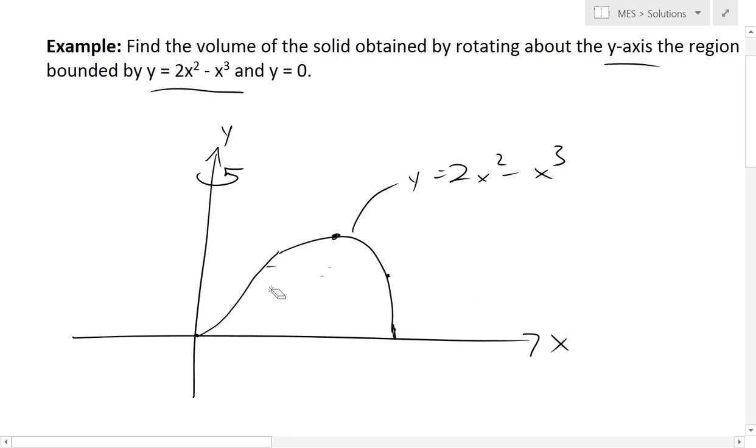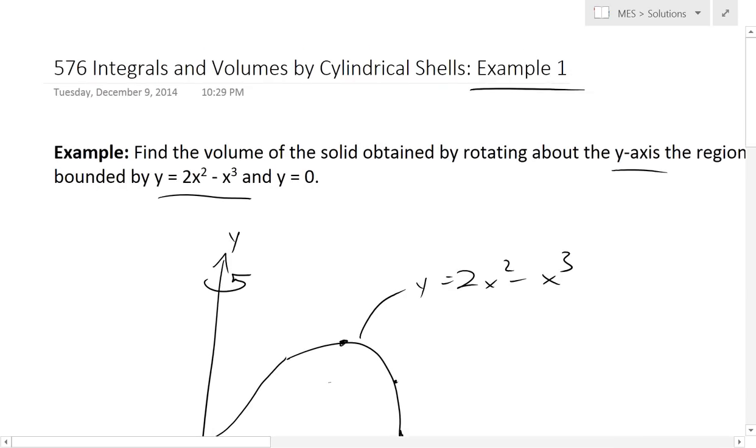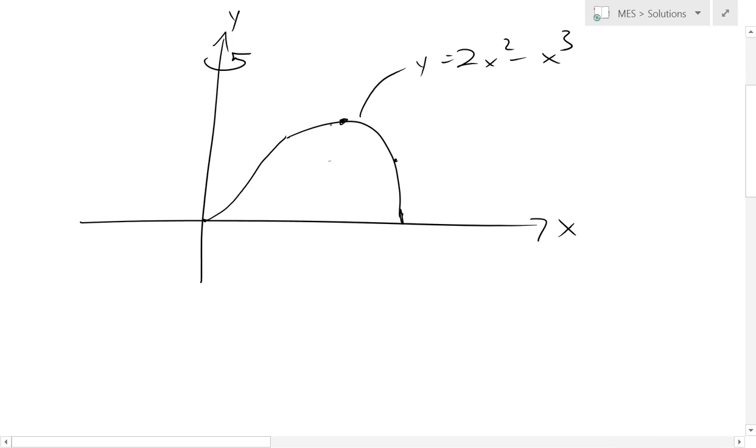So we will use the cylindrical shells method, which I showed in my earlier video. So we would just pick a random section like this, a vertical section. So at this point in between we'll call this, this is going to be our x. And now we rotate this around.